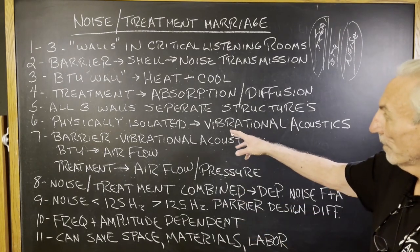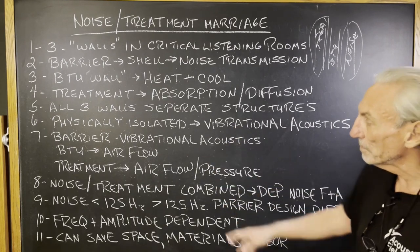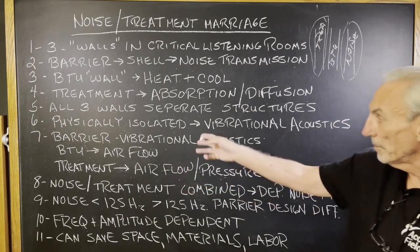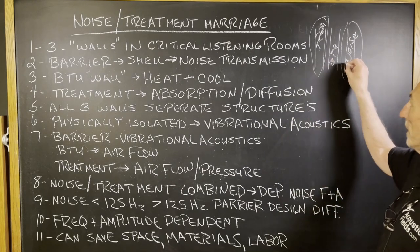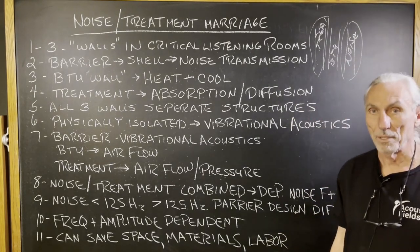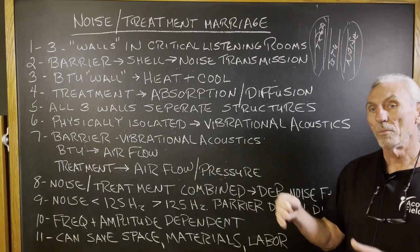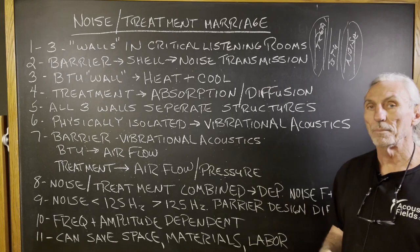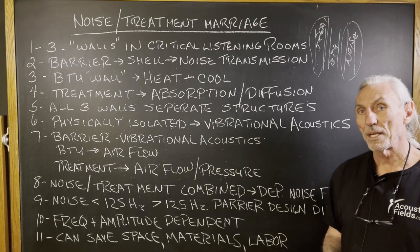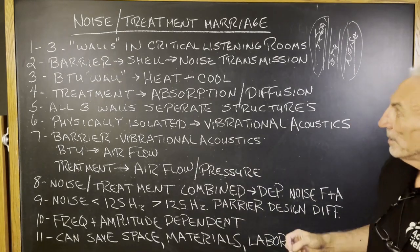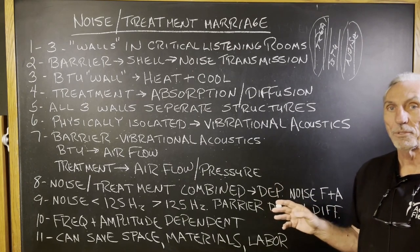So we have three separate structures, usually isolated from each other. You can see the different functions: BTU is airflow, treatment is airflow, and the barrier — noise — that's vibrational acoustics. There are times where we can combine them. We do this with our CAW process, where we combine the treatment between the 2x12 studs with the barrier, which forms the back wall of the diaphragmatic absorbers between the studs and the CAW system. The bottom line is we can do it, but it depends on the frequency and amplitude of the noise.